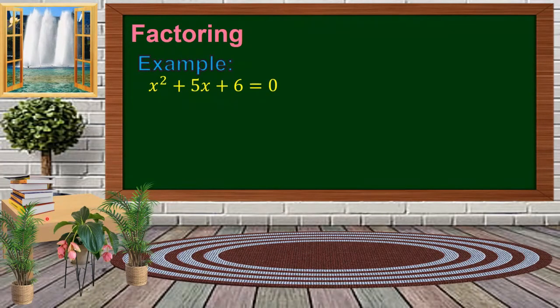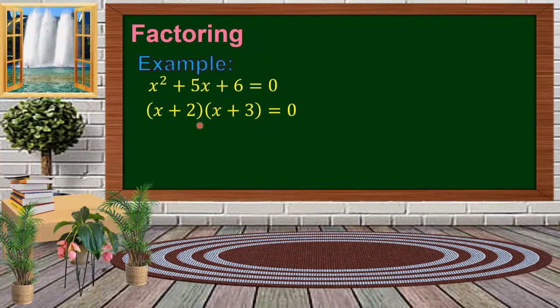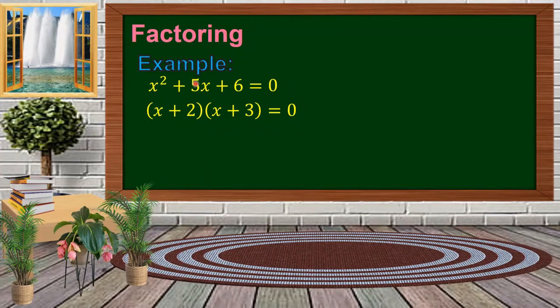Another method in solving quadratic equations is factoring. For example, x squared plus 5x plus 6 equal to 0. We find the factors: x plus 2 and x plus 3. We can verify using FOIL — multiplying 2 and 3 gives positive 6, and adding 2 and 3 gives positive 5.